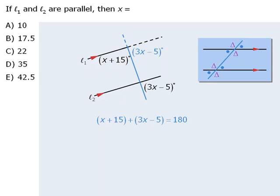From here we have an equation we can solve for x. First we'll simplify the left-hand side, then we'll subtract 10 from both sides, and then we'll divide both sides by 4 to get x equals 42.5, which means our answer is e.